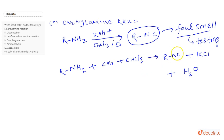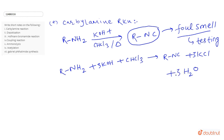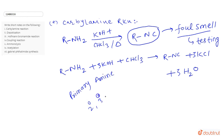There are 3 Cl atoms, so we put 3 on that side, and due to which 3 potassium atoms appear on the right-hand side, so we put 3 potassium on the left-hand side. For balancing hydrogen and oxygen we put 3 here. This is the balanced reaction and it is used to test primary amines.